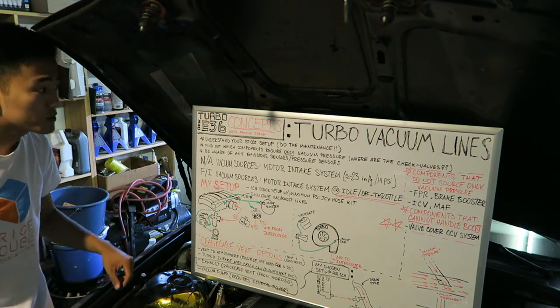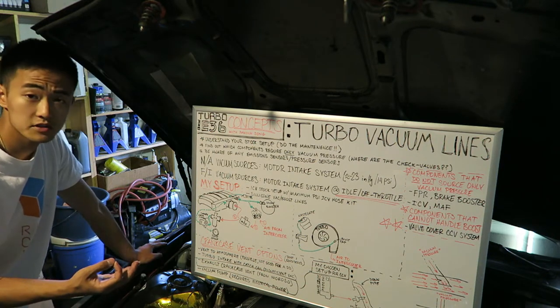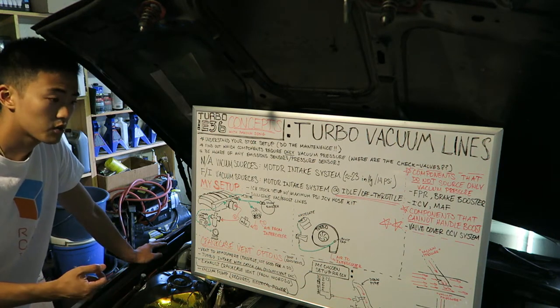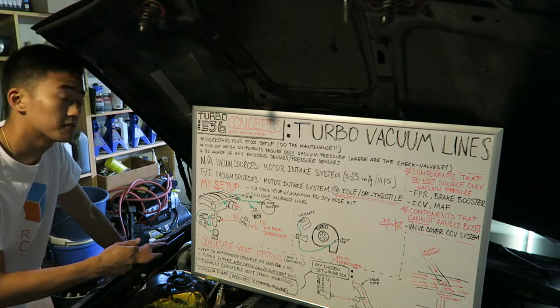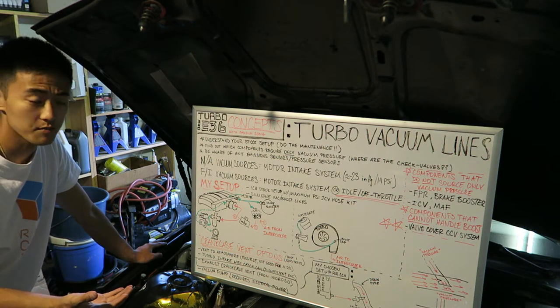The next step is find out which components require only vacuum pressure. A lot of components in modern cars have check valves, so it will only pull vacuum in one direction, but if it was pressurized in the other they'll block it from being damaged from the air pressure.